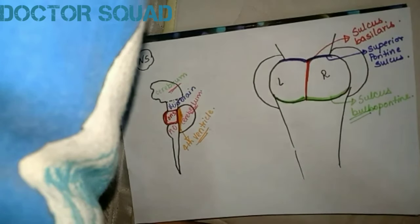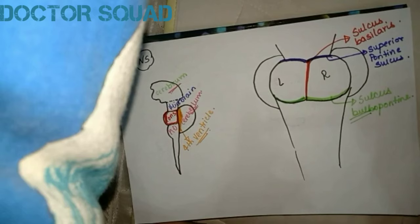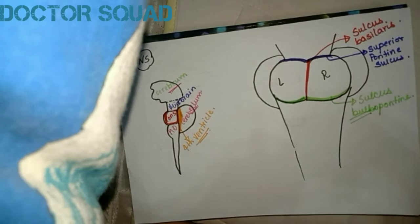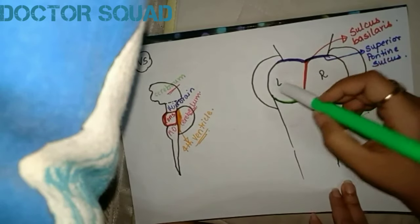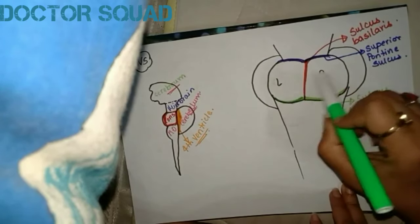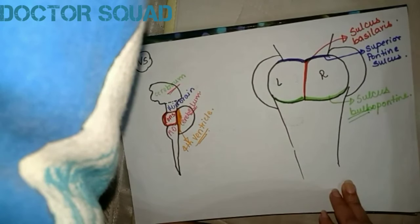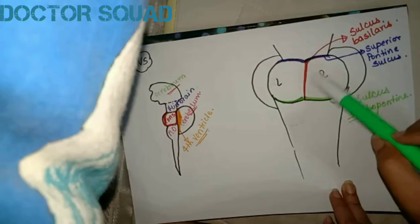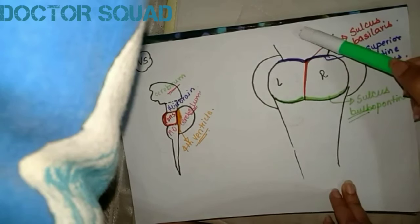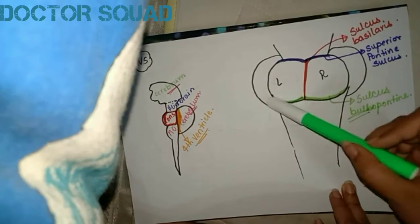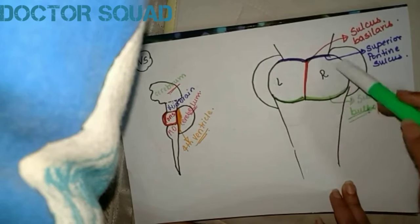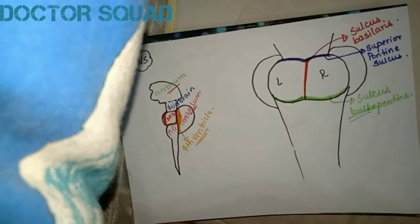Let's revise. There are three sulci: sulcus basilaris, sulcus pontine superior, and sulcus bulbopontine. Sulcus basilaris divides pons into two parts — left and right. Sulcus pontine superior divides pons from the midbrain. Sulcus bulbopontine divides pons from medulla oblongata.